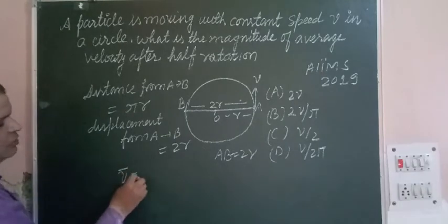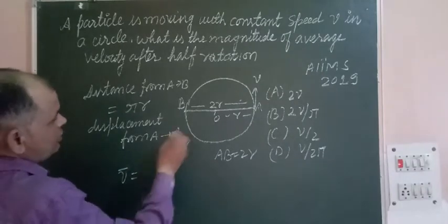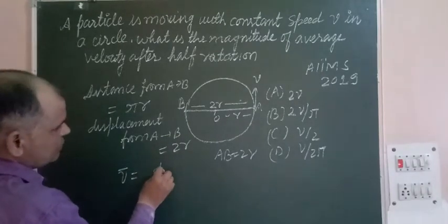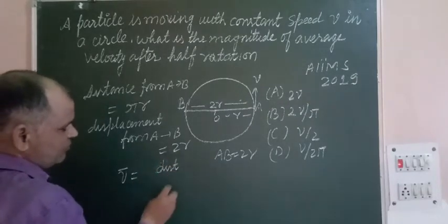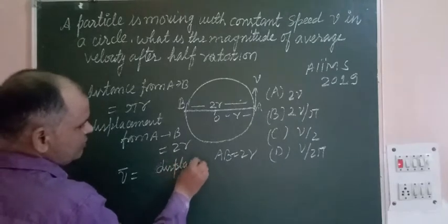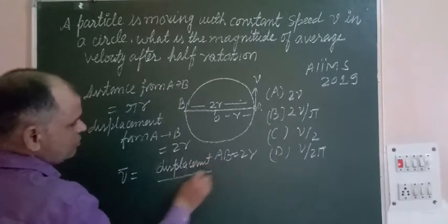Displacement from A to B is 2R. So average velocity equals total displacement over time, because velocity is displacement upon time.